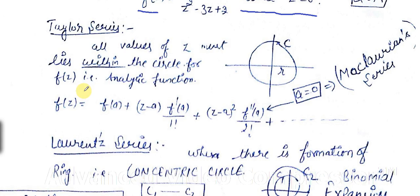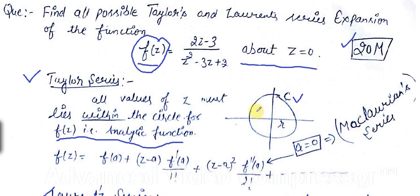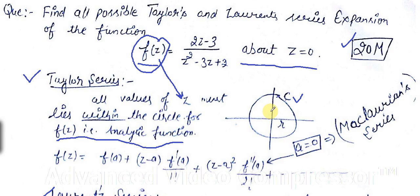First we need to learn what Taylor series is. These two — Taylor series and Laurent series — are power series. We know that f(z) is an analytic function. If there is a circle — a circular path, say curve C — and all the values of z of the function f(z) lie within that circle, then the series is said to be a Taylor series.